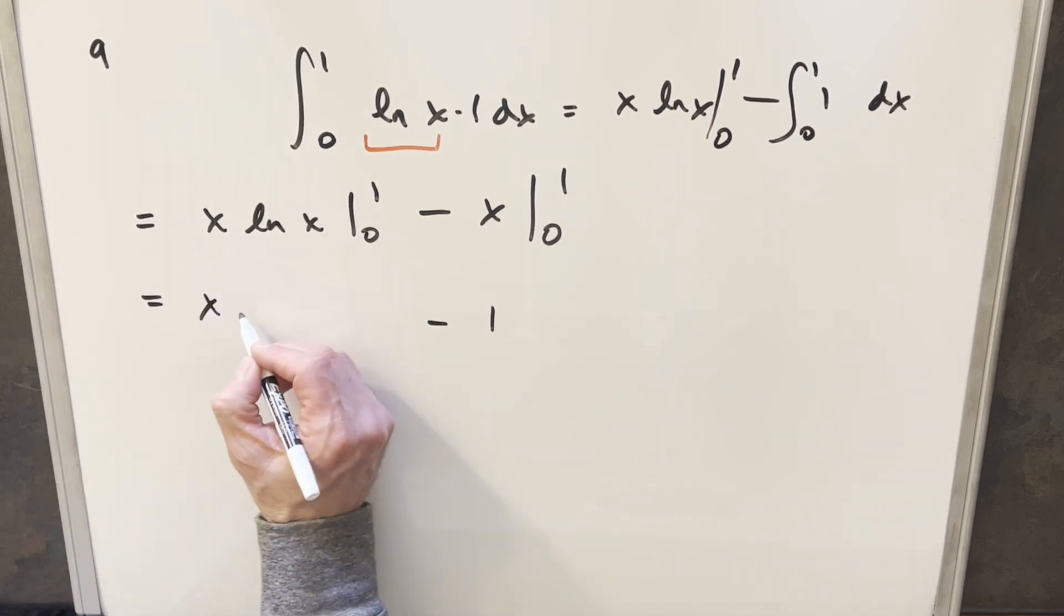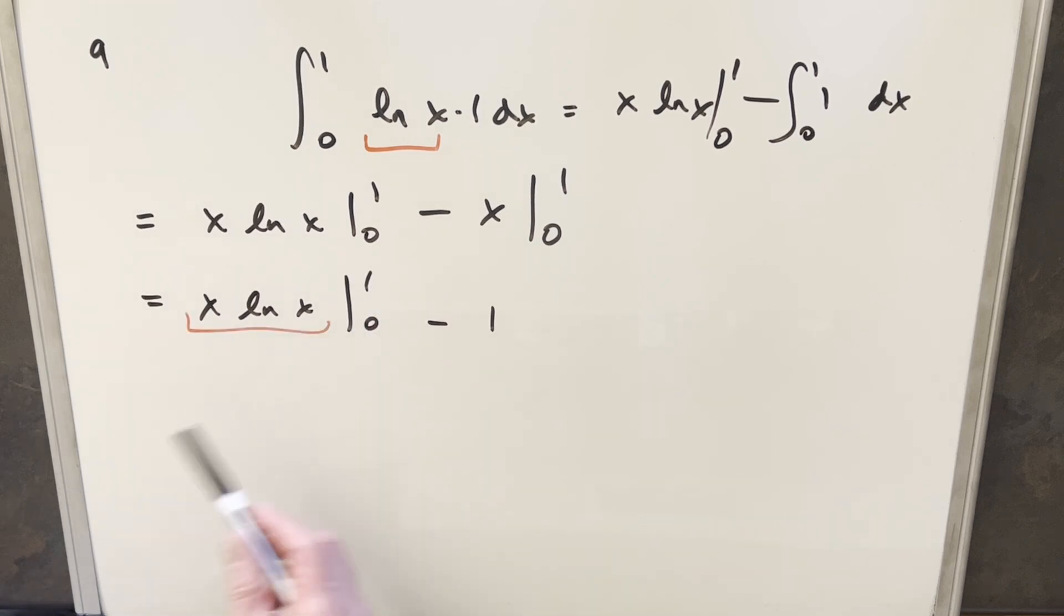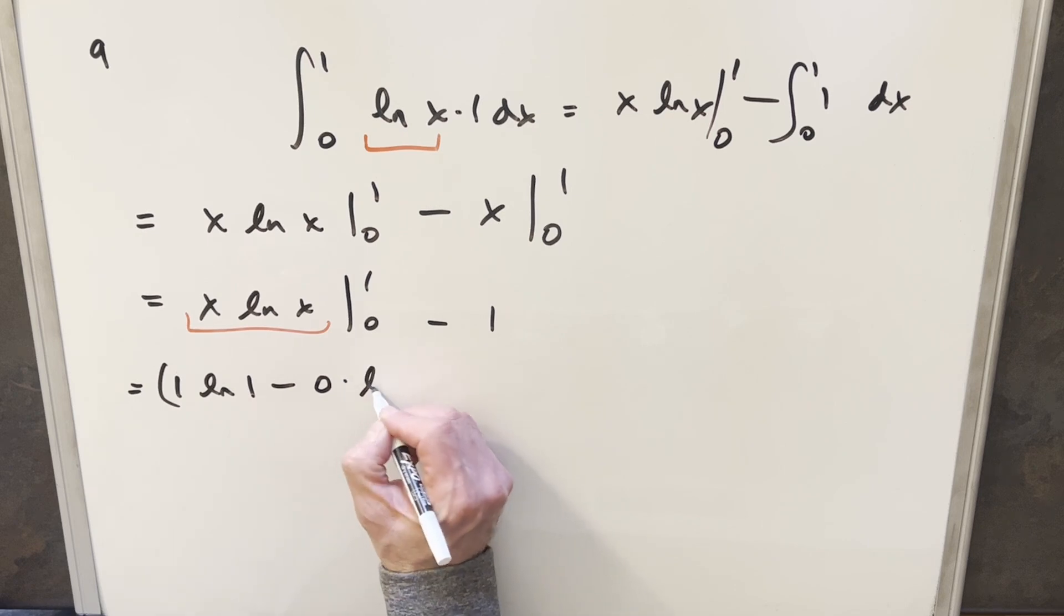We still need to evaluate this piece over here. This is the part where I'm going to do this carefully, because we have that problem at zero. That's where I'm going to use a limit. But first, let's just plug in. Plugging in one, we have one times natural log of one, minus zero times natural log of zero. And we'll have this minus one on the end. Natural log of one is zero, so this piece goes away.